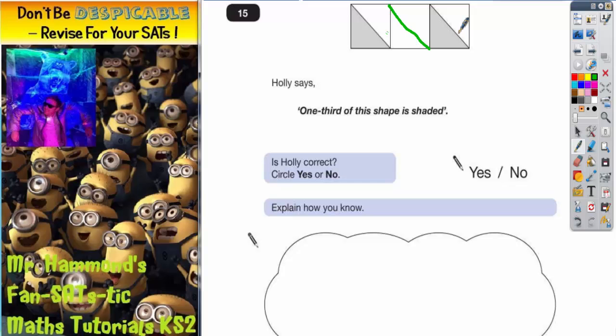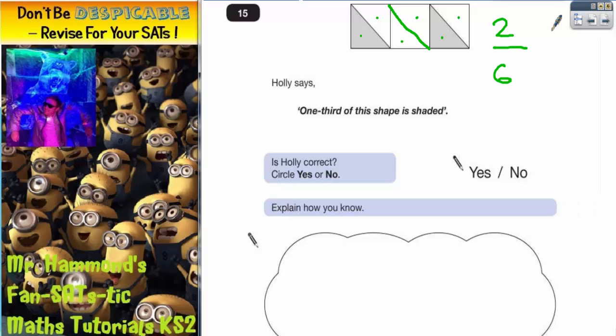Now if you think about triangles and count them you've got one two three four five six. So this time we've got six triangles and how many of them are shaded, well two of them are so we've got two out of six. Now you should know if you've done simplified fractions that if you're dealing with two sixths you can half both of those. So half of two is one and half of six is three.